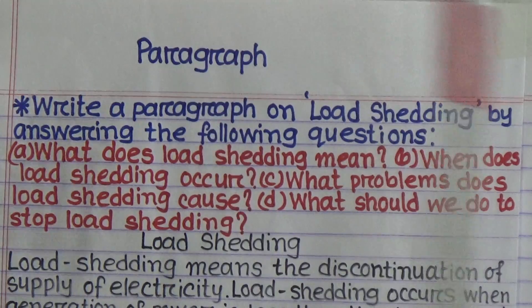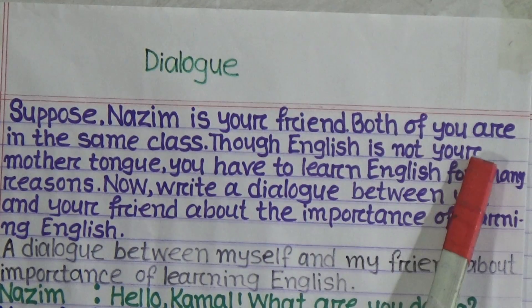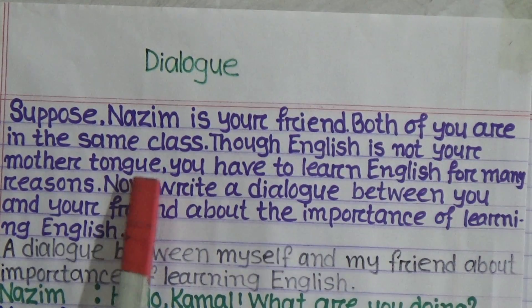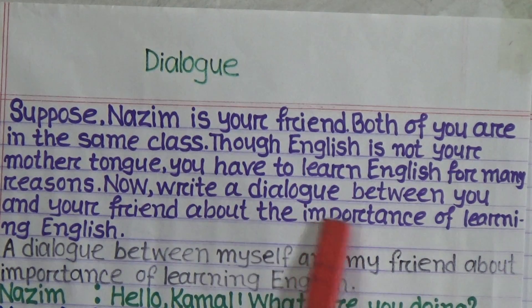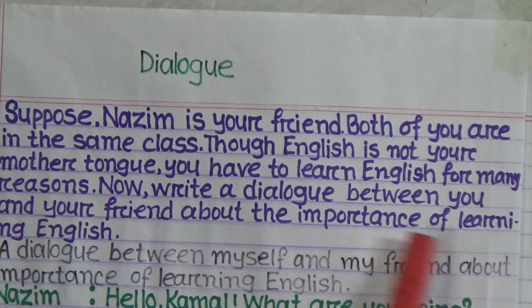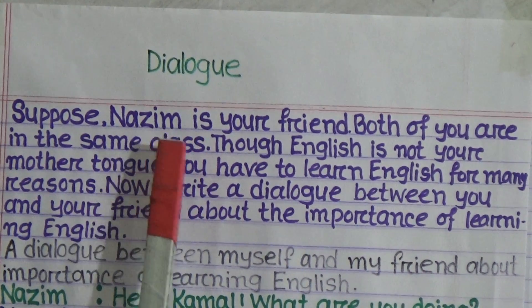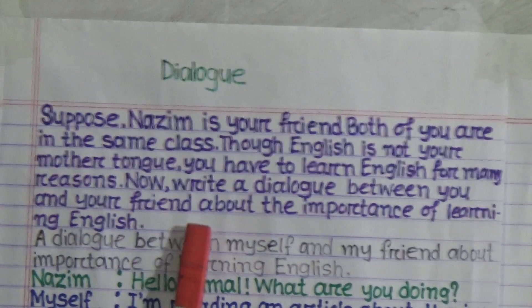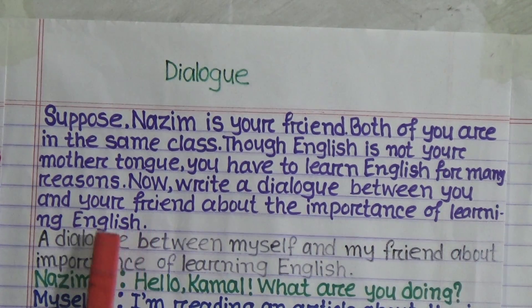Now I'm going to talk about dialogue. The question is: suppose Najim is your friend; both of you are in the same class. Though English is not your mother tongue, you have to learn English for many reasons. Now write a dialogue between you and your friend about the importance of learning English. Your friend's name is Najim, and both of you will make a dialogue on the topic of the importance of learning English.